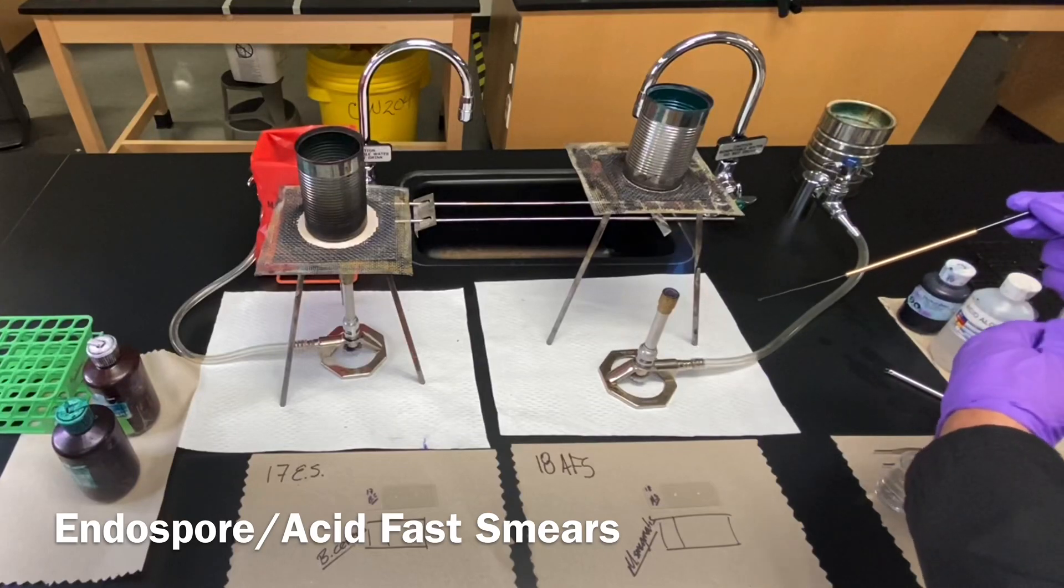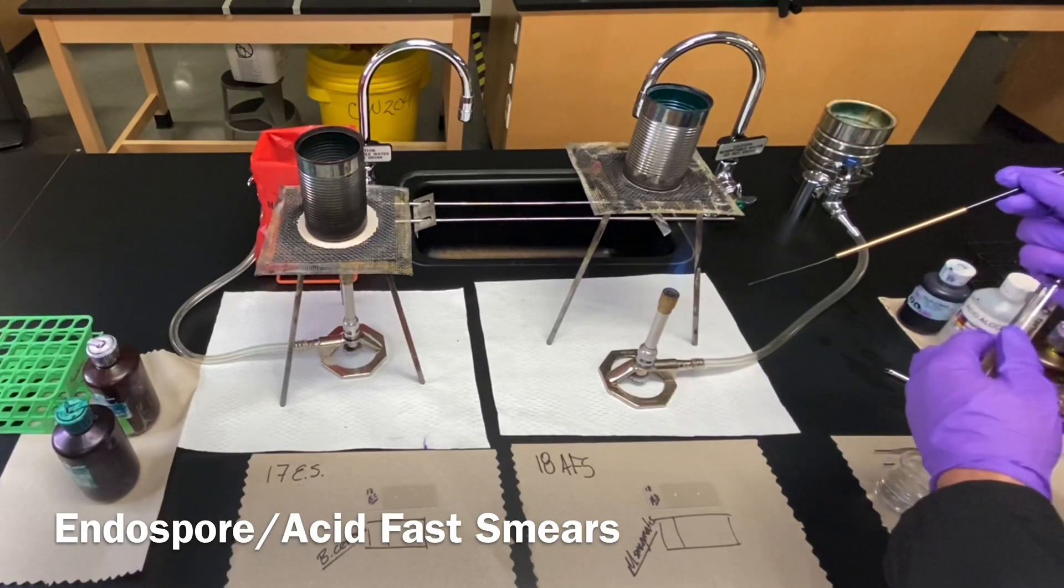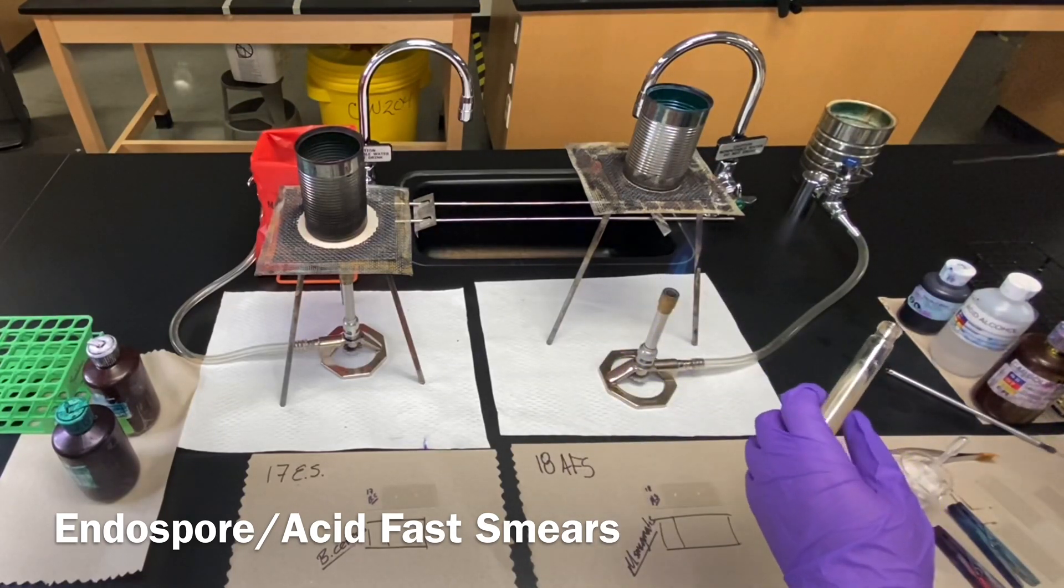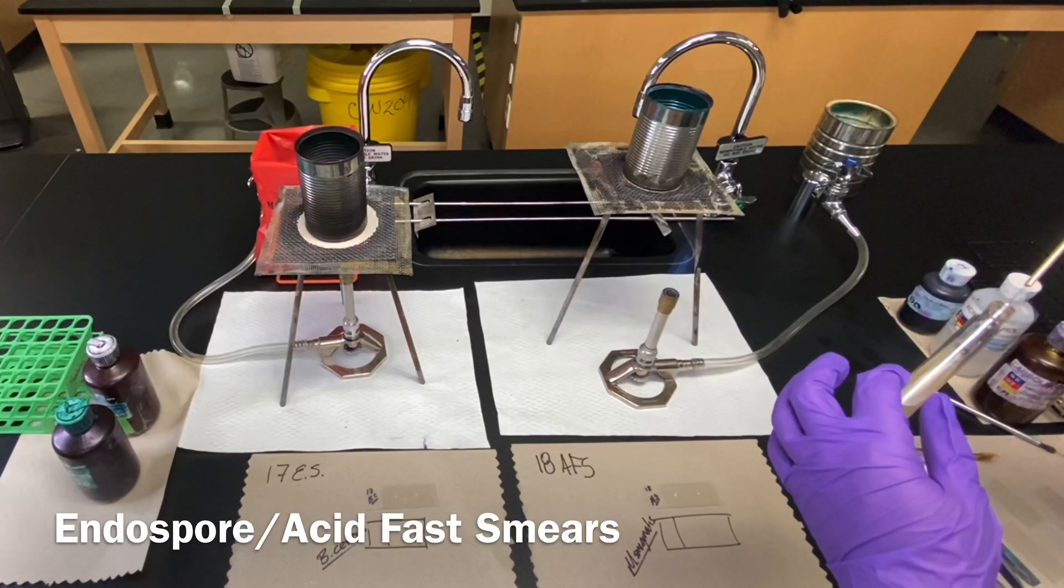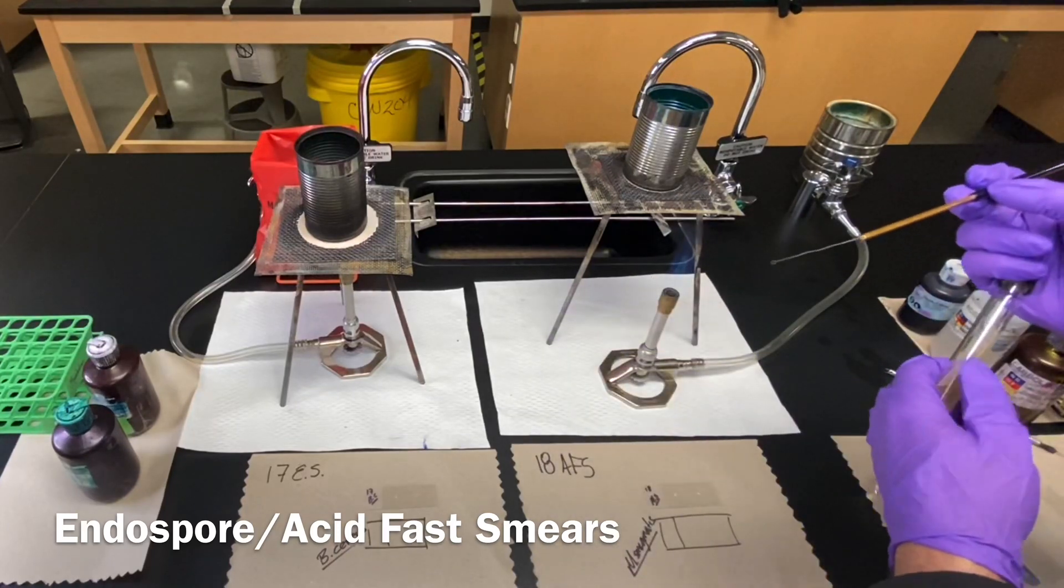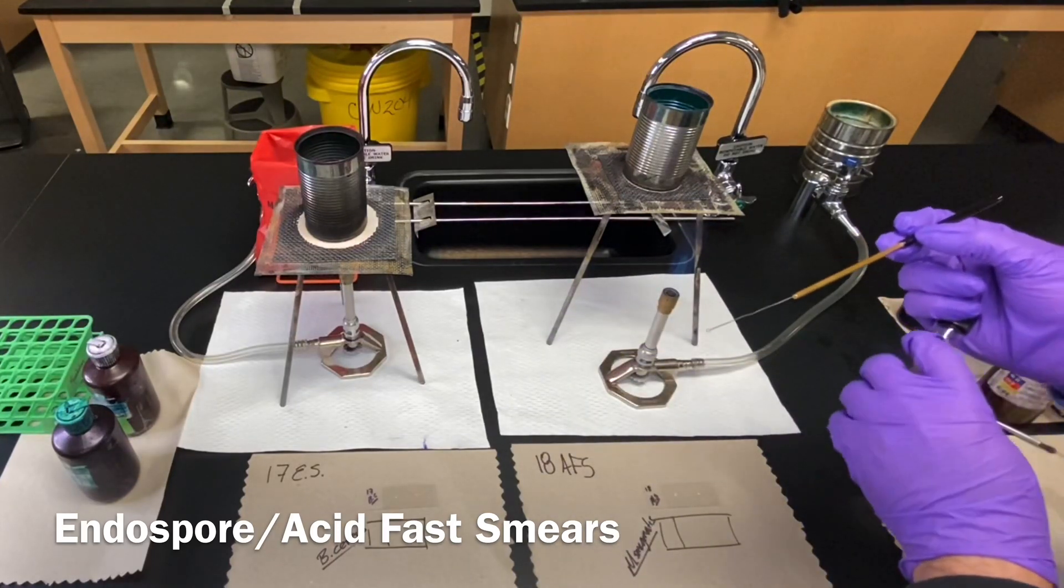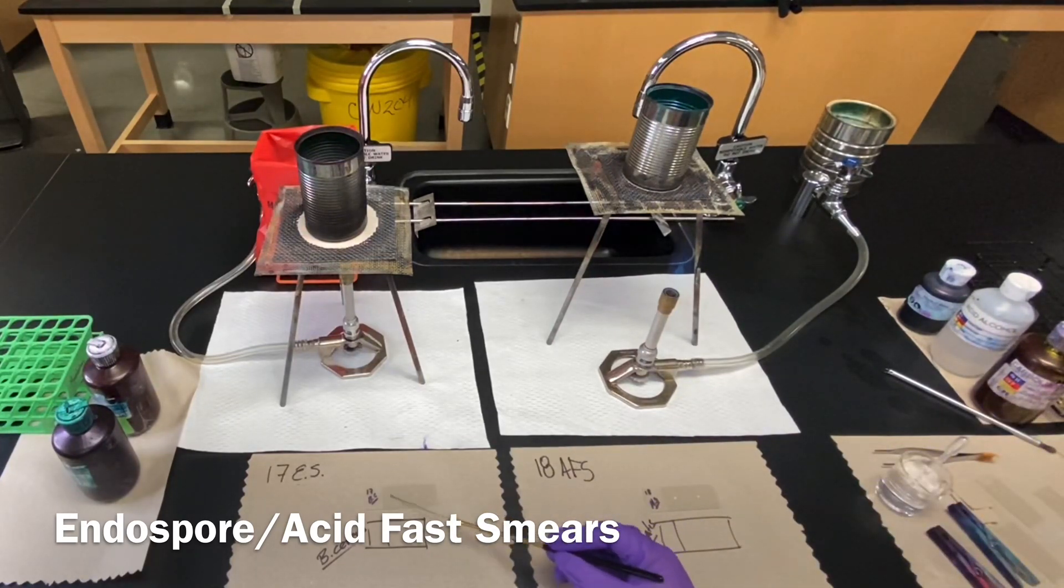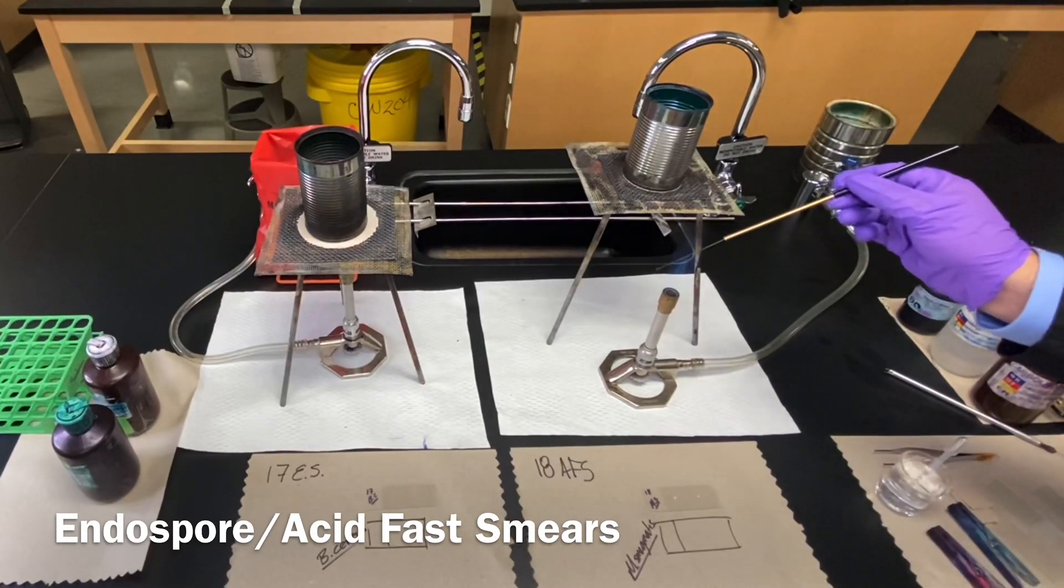I'll start off with my endospore stain. Once 15 seconds have passed and set it up, in this case, we really want to make sure we spread these out. Because both of these stains have a tendency of clustering and having some issues with the stains themselves. So we're going to spend a little extra time going in little circles to make sure we spread this out. I'm done with my first transfer.